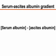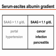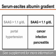Analysis of the fluid begins with the determination of the serum ascites albumin gradient. Gradients higher than 1.1 grams per deciliter indicate that the ascites is due to portal hypertension. Gradients less than 1.1 grams per deciliter suggest other causes, such as cancer, infection, or pancreatitis.